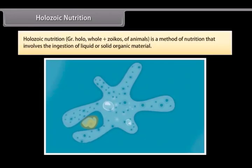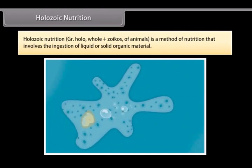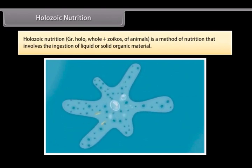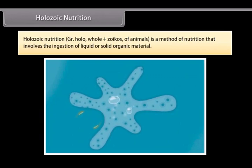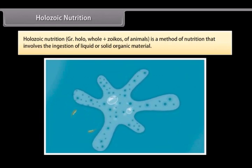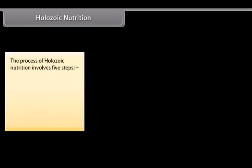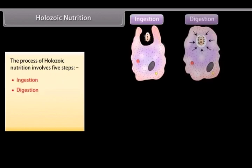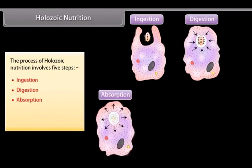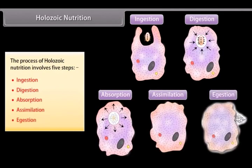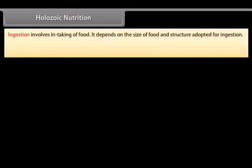Holozoic nutrition — where 'holo' means whole and 'zoicos' means animals — is a method of nutrition that involves the ingestion of liquid or solid organic material. The process of holozoic nutrition involves five steps: ingestion, digestion, absorption, assimilation, and egestion. Ingestion involves the intake of food and depends on the size of food and structure adopted for ingestion.